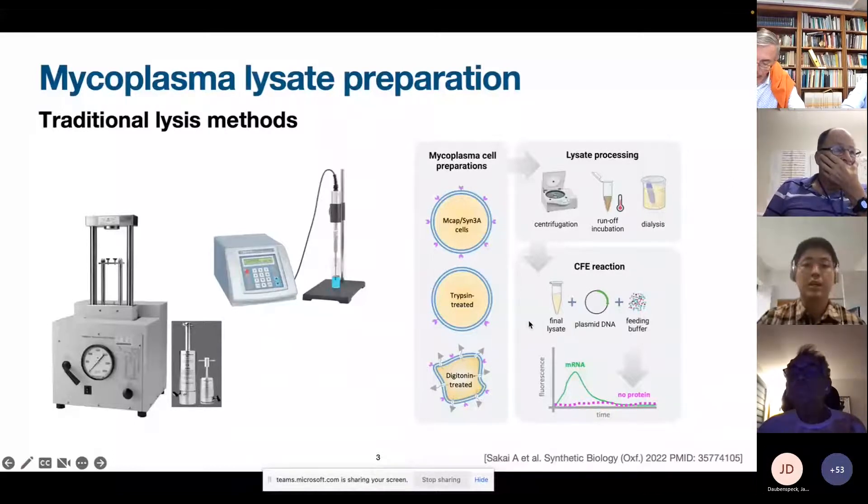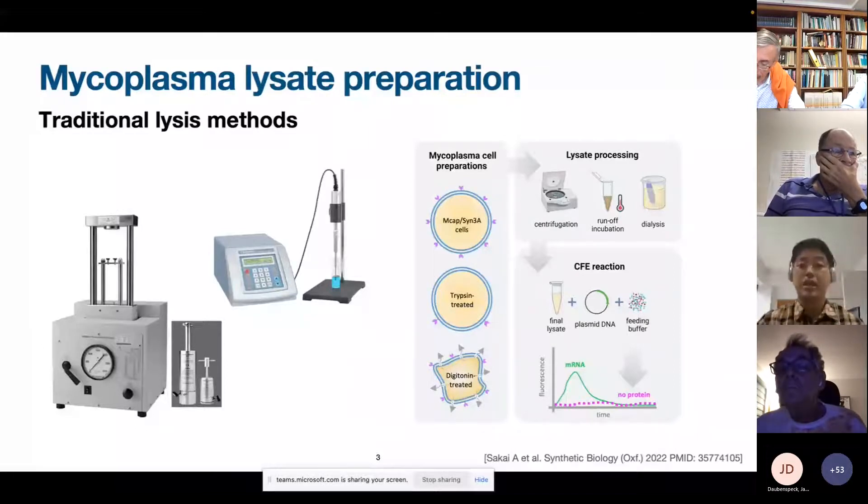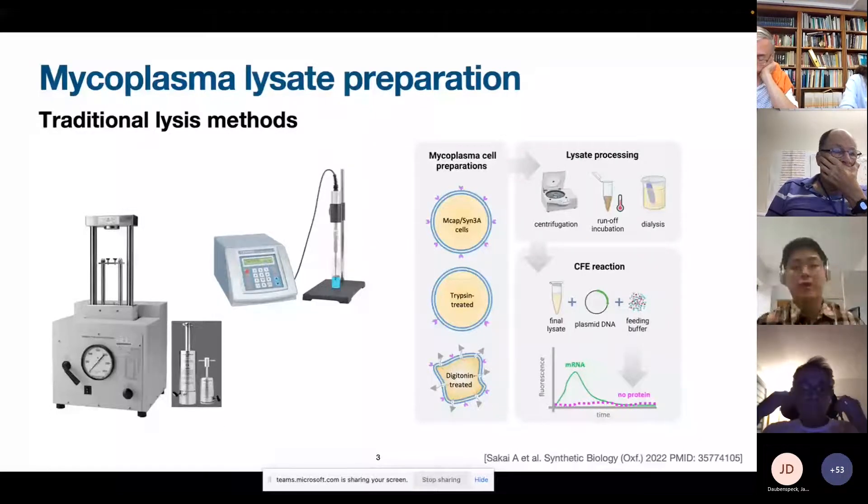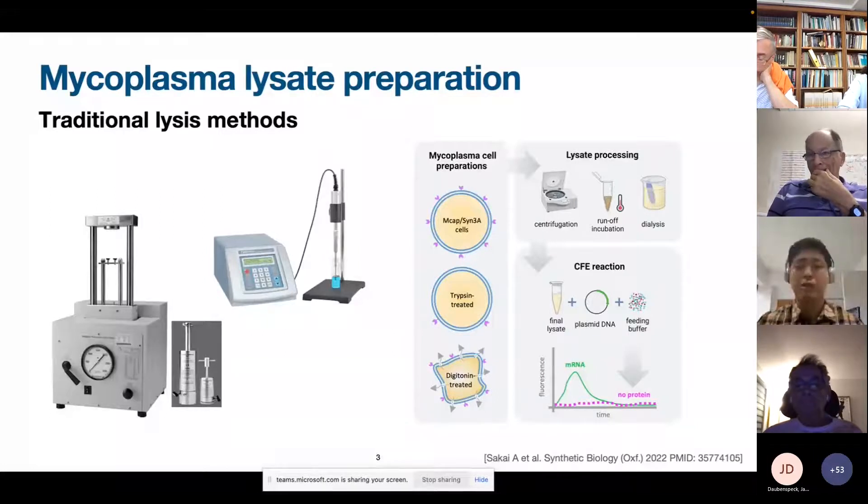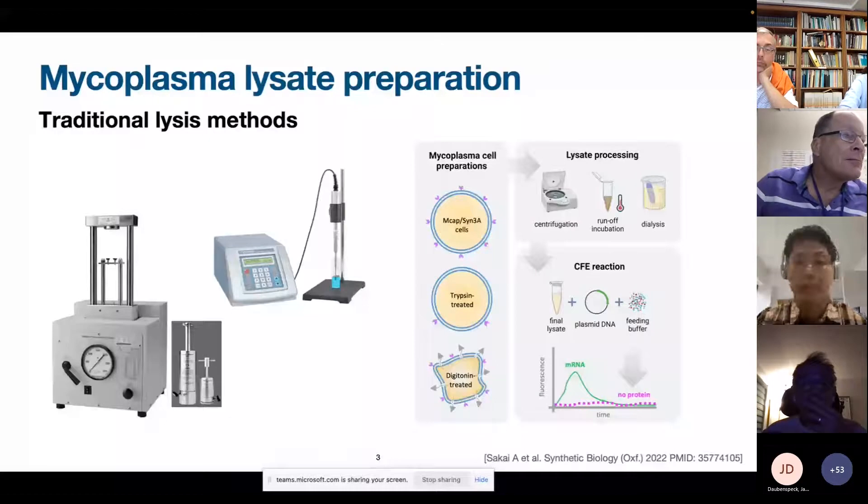And those traditional lysate methods did not produce a lysate that supported expression. So here you can see that we prepared several cell preparations. So the wild type mycoplasma capricolum and JCVI-SYN3A. We tried to, for example, trypsinize the cells because we found a very high nuclease activity at the surface of mycoplasma cells. We also tried to lyse the cells using chemical methods, for example, using digitonin to open pores at the membrane. But all those attempts, in the end, led us to a system that was not capable of producing proteins.